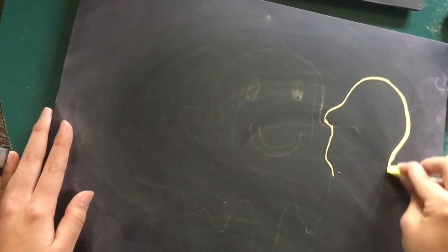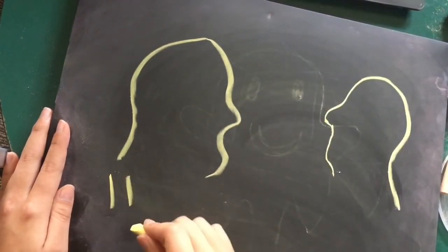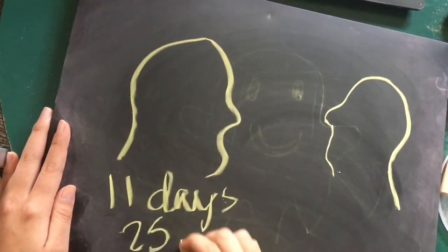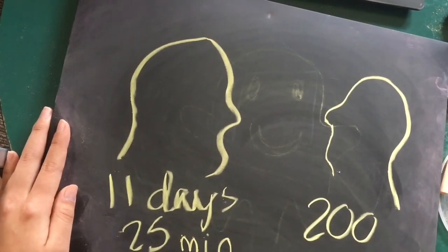Two of the most famous cases of sleeplessness are Peter Tripp and Randy Gardner. Gardner went 11 days and 25 minutes without sleep, while Tripp went 200 hours, which roughly equates to 8 days. Both experienced hallucinations and an inability to recognize what they were touching.